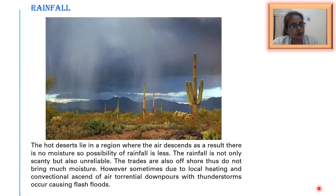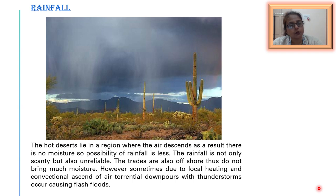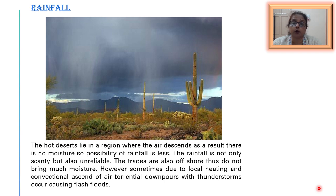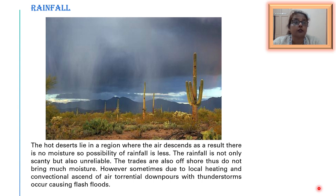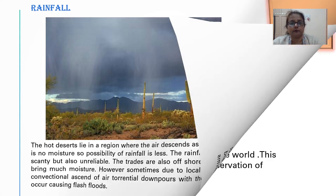Hot deserts lie in a region where air descends, resulting in very little possibility of rainfall. The rainfall is not only scanty but also highly unreliable. The trade winds are offshore and do not bring enough moisture. However, sometimes due to local heating and convectional ascent of air, torrential downpours with thunderstorms occur, causing flash floods — a sudden torrential rain which creates a flood-like situation in the desert. Surprisingly, people living in the desert sometimes do not die of heat but of drowning. This is strange yet true.